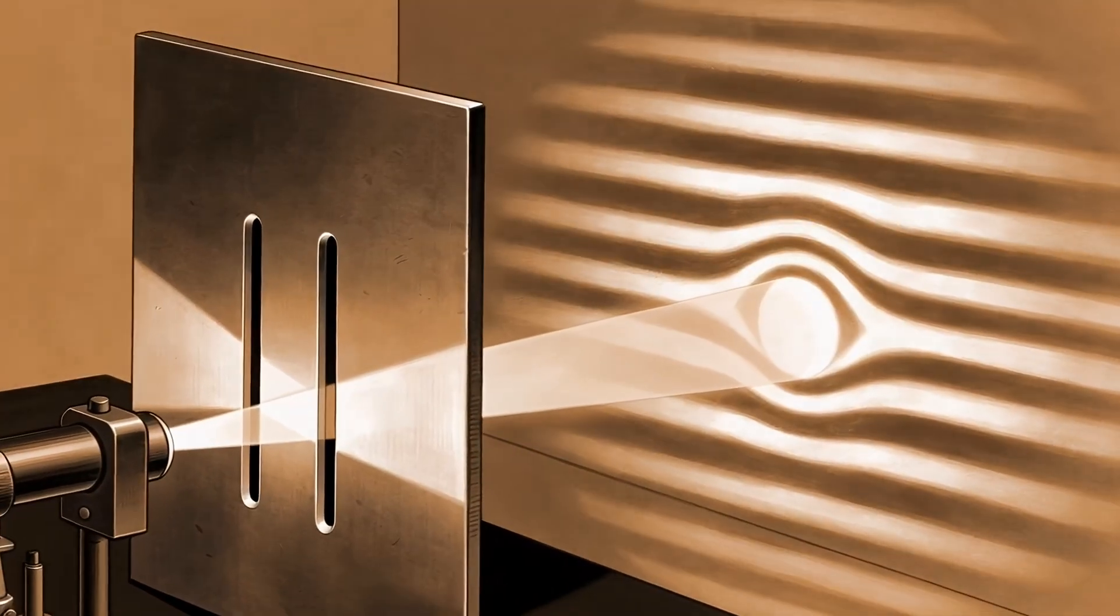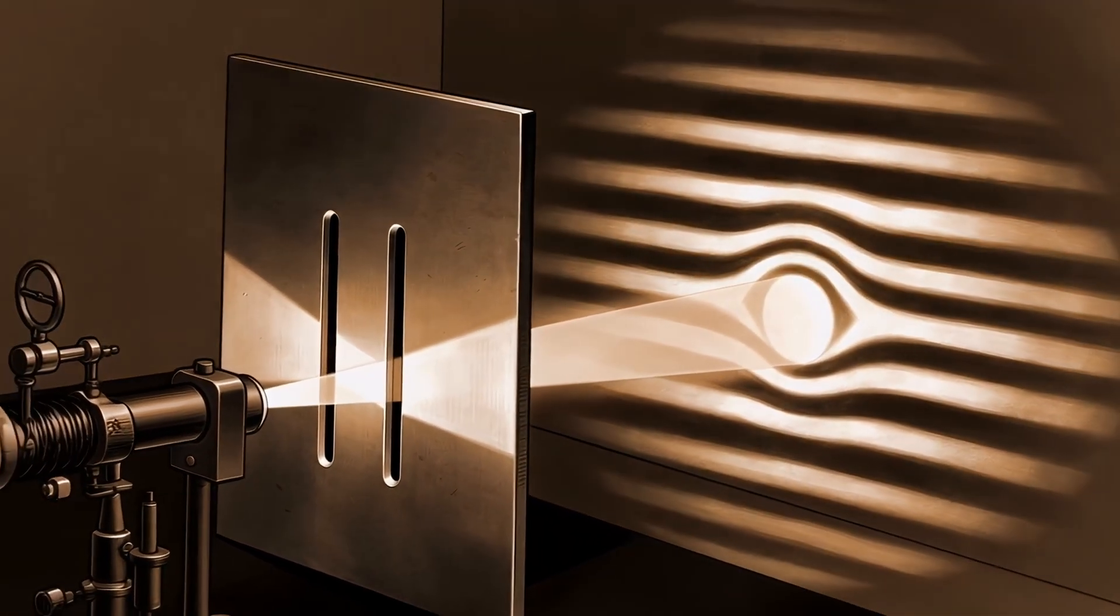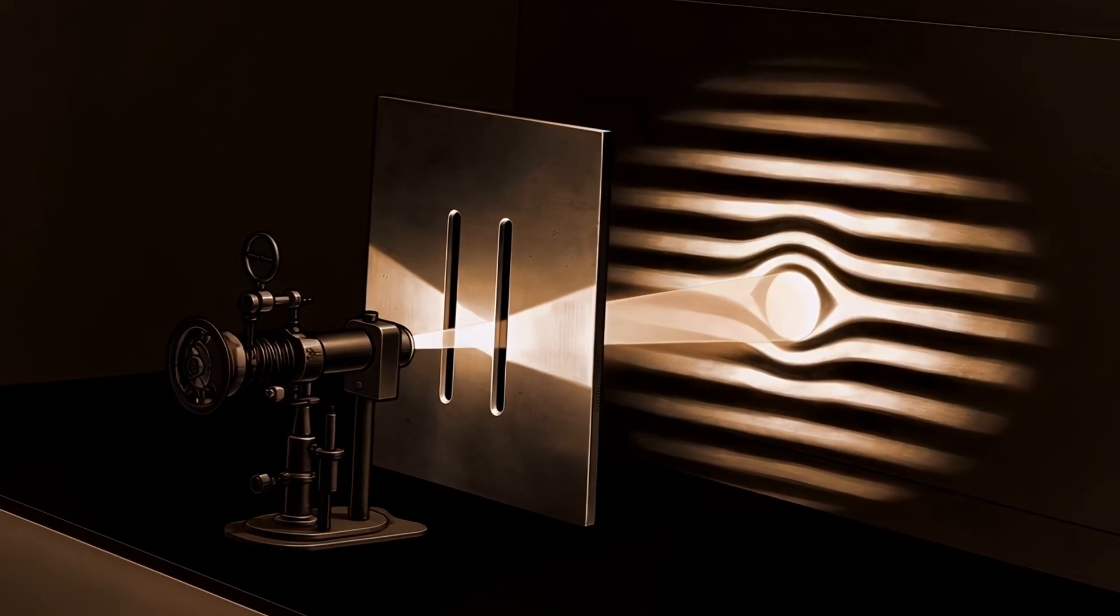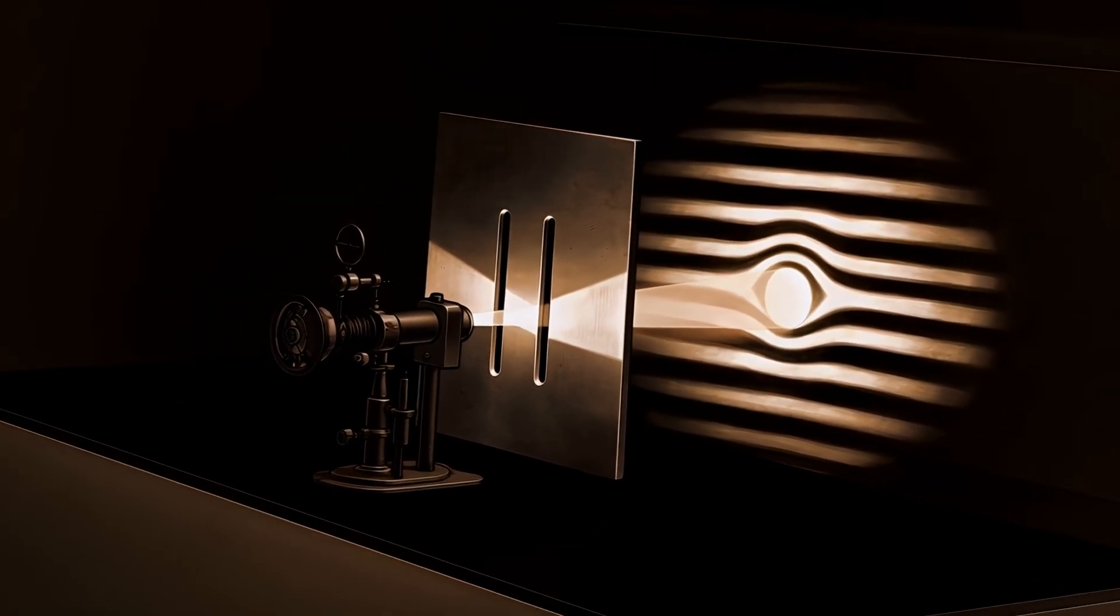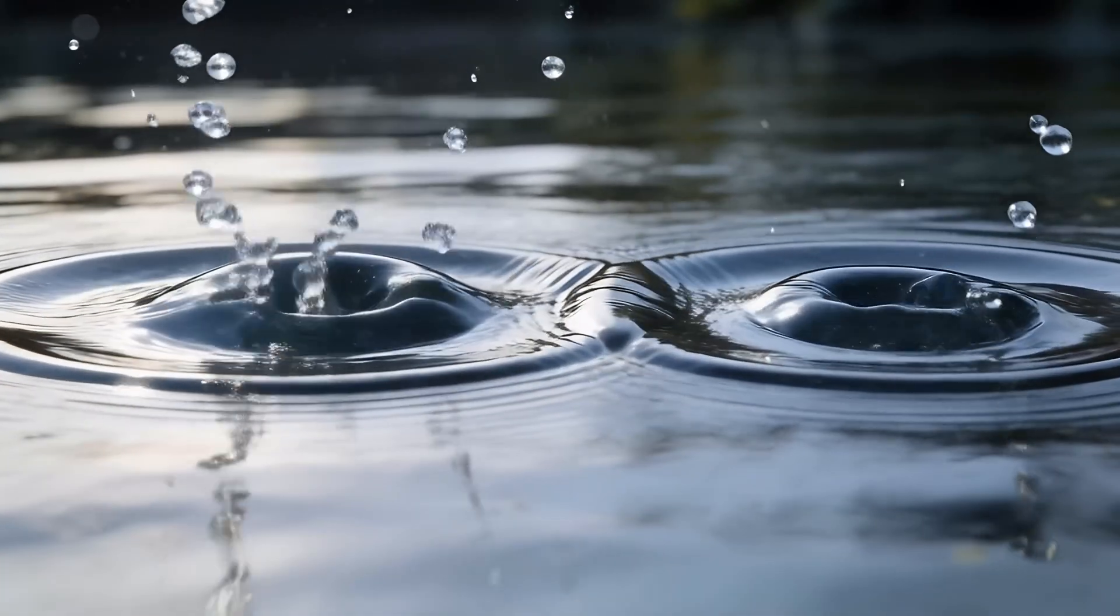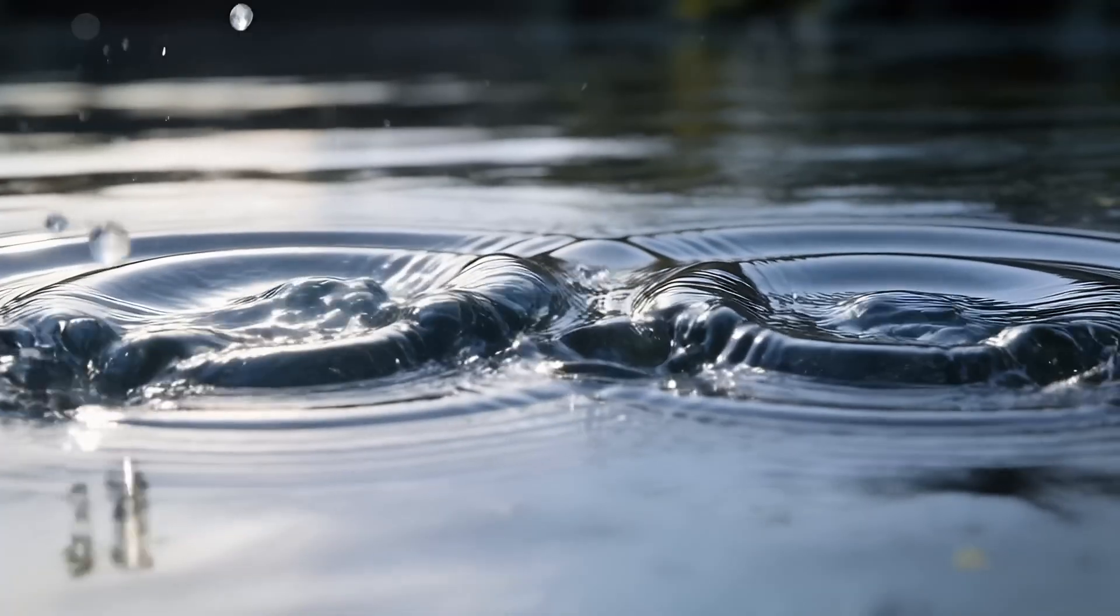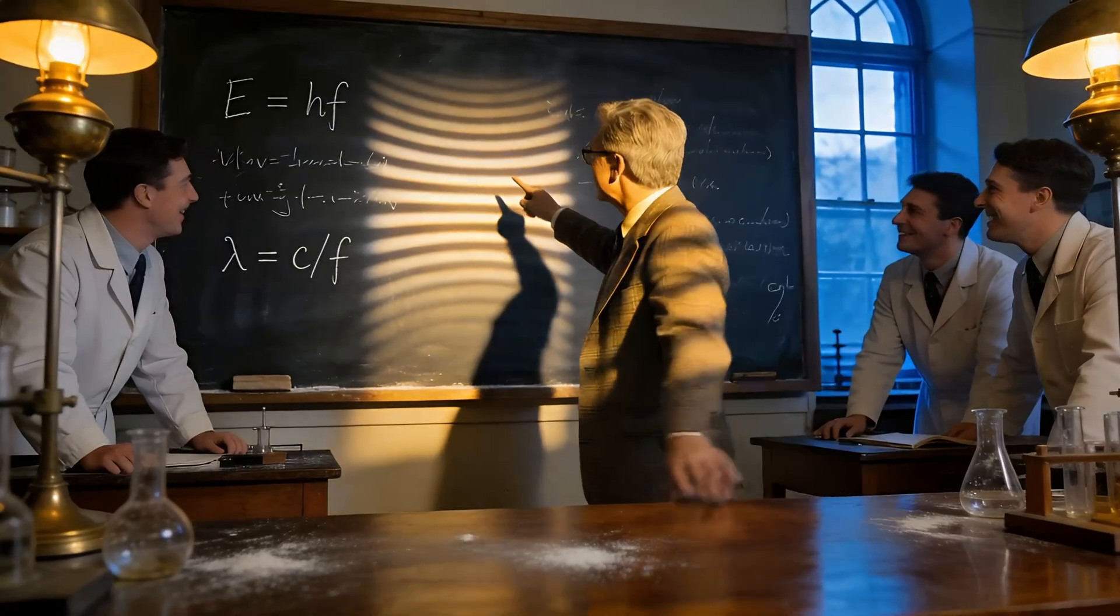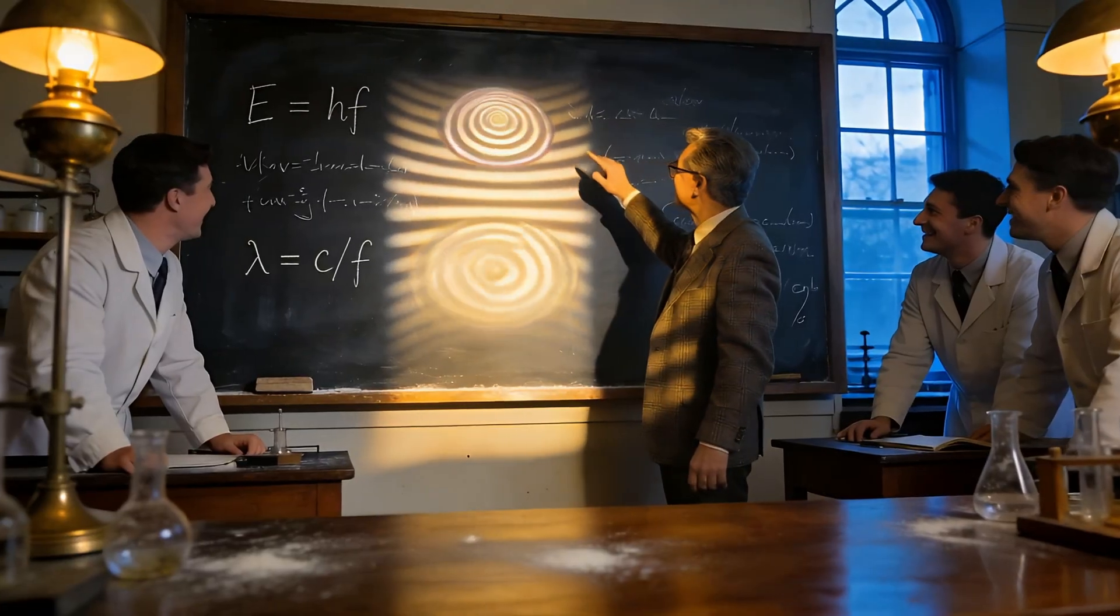If light is a wave, it should pass through both slits, interfere with itself, and create a pattern of bright and dark bands on the wall. That's interference, where waves overlap and either amplify or cancel each other out. And that's exactly what happened. The light made those bands. So light must be a wave, right? But then, things got weird.